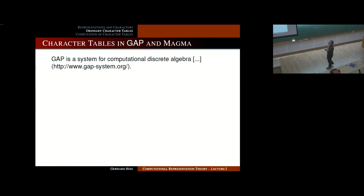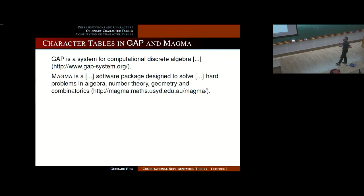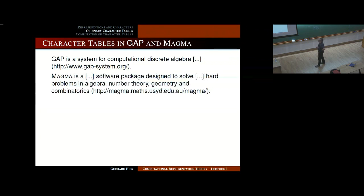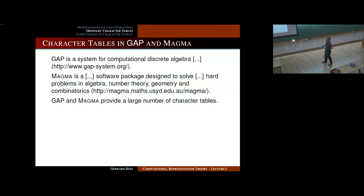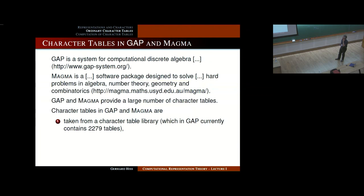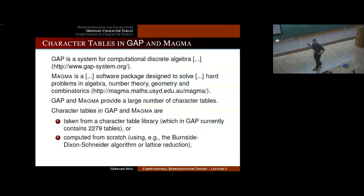GAP is a system of computational discrete algebra. Magma is a software package designed to solve hard problems in algebra — as Alexander pointed out, GAP has the same aim. GAP is somehow best in group theory, whereas Magma also has very nice number-theoretic, geometric, and combinatoric features. There are a large number of ordinary character tables available in GAP: the latest I have found is 2,279 character tables already there. If you don't find your favorite character table, you push a button and GAP will try hard to produce it for you.